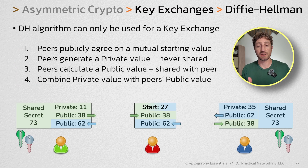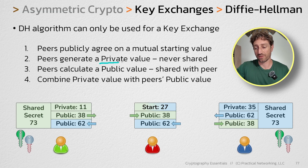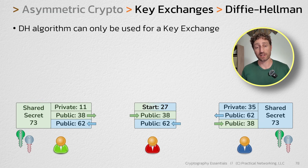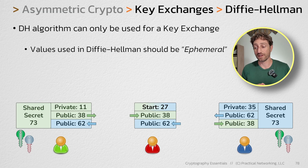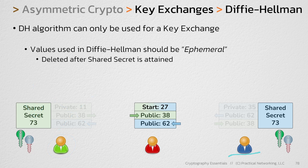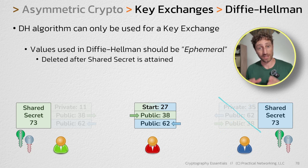Earlier I mentioned keeping things encrypted forever, and that has to do with these private values. Remember, these private values were instrumental in the calculations to attain the shared secret of 73. There's a way of doing Diffie-Hellman such that those values are ephemeral — meaning they are deleted after they are used. The idea is that once the green user has calculated 73, he'll purge all of these numbers from memory. The blue user will do the same. The numbers are never written to a file, never written to a database, never stored.